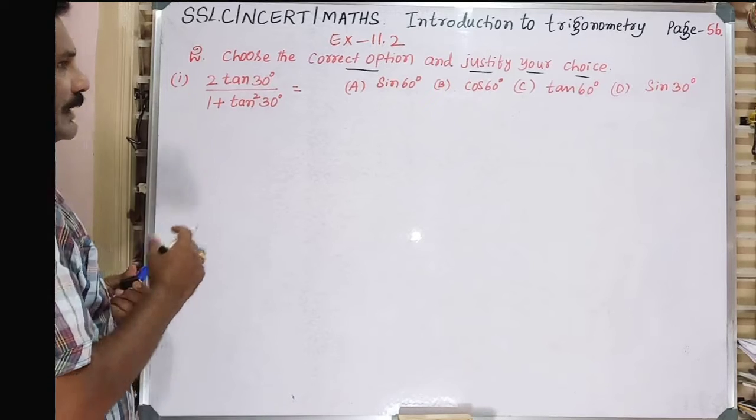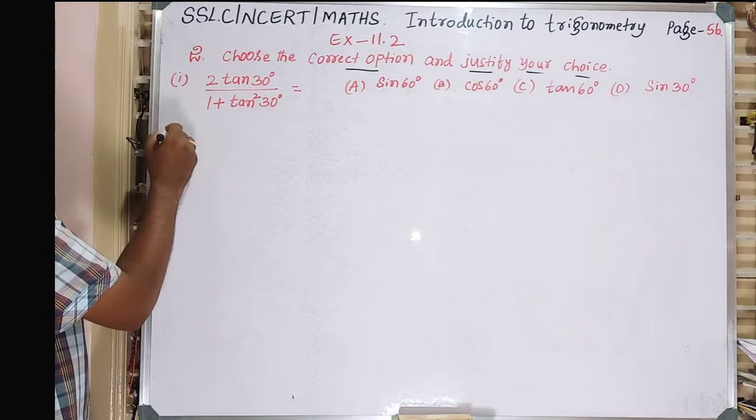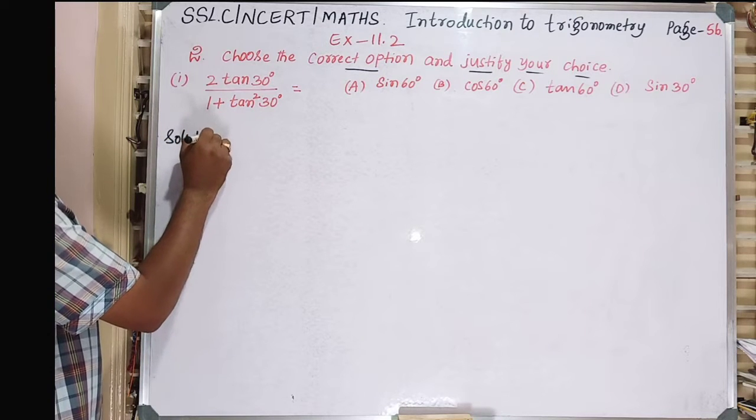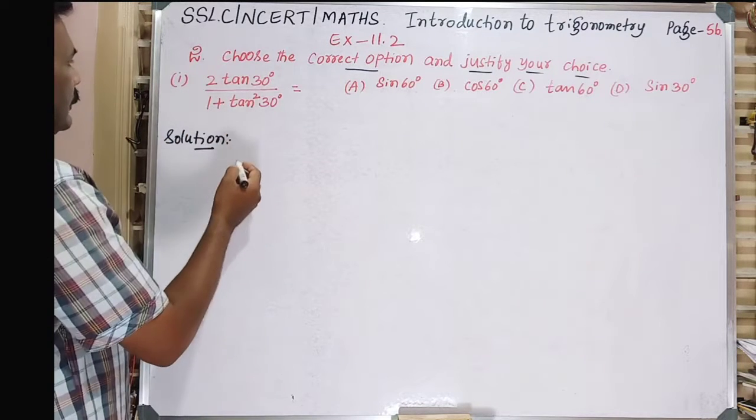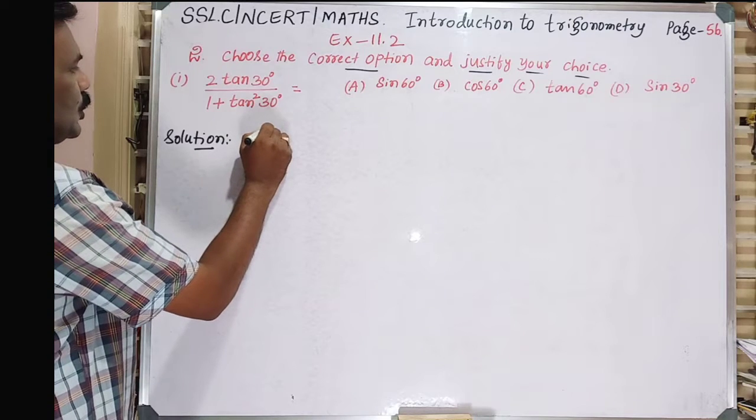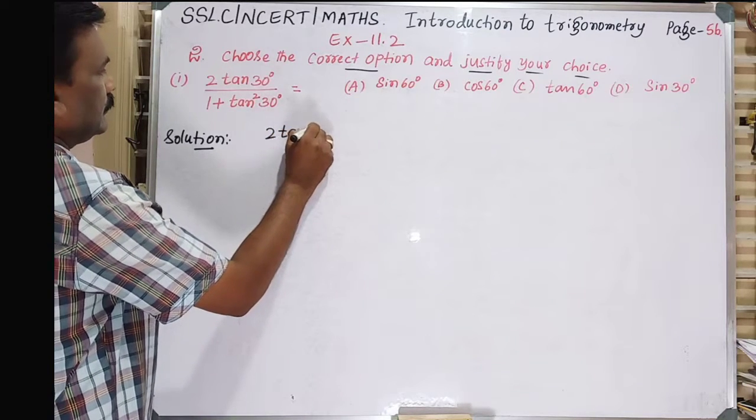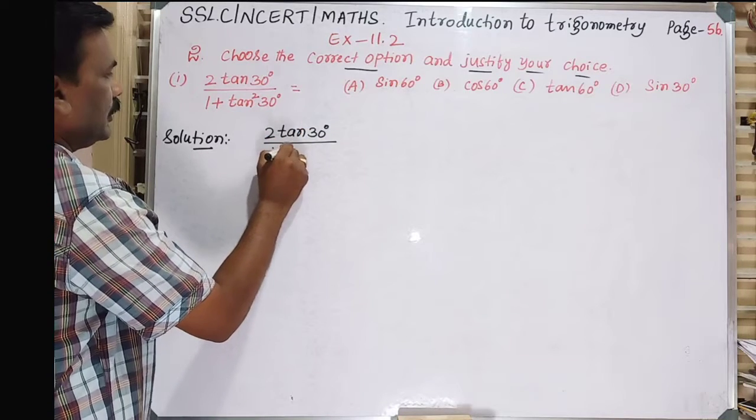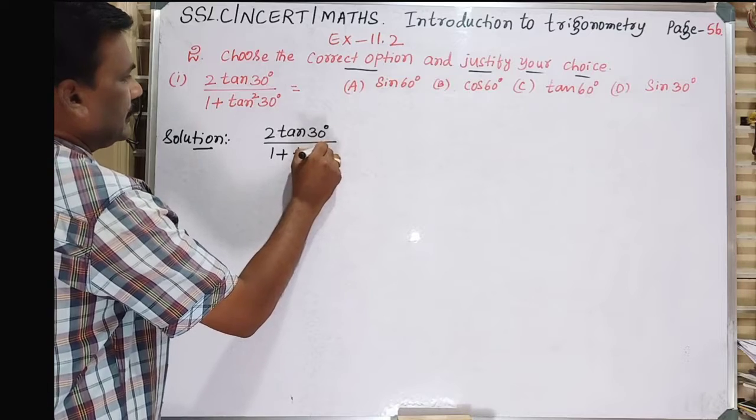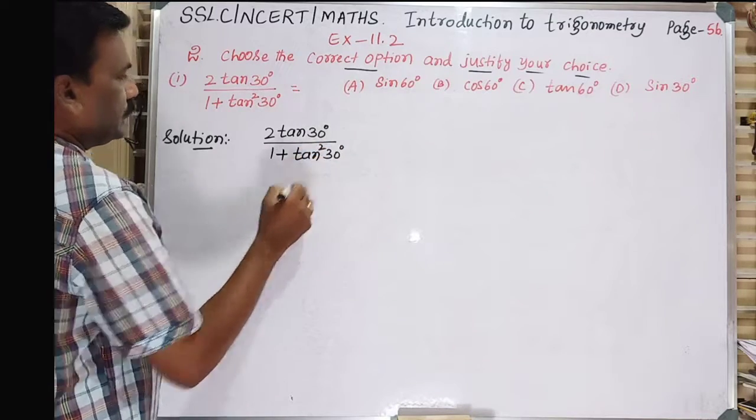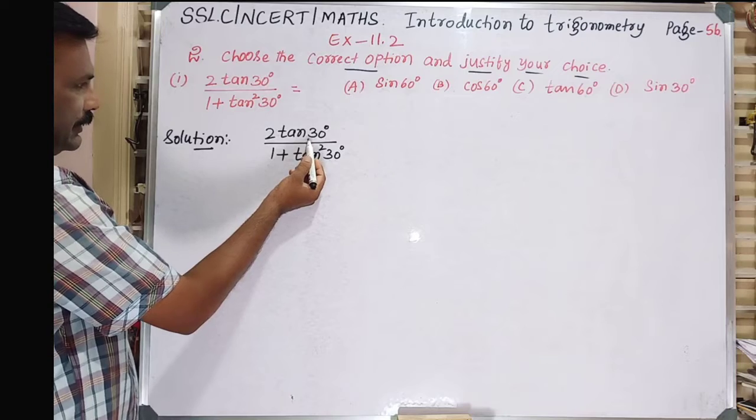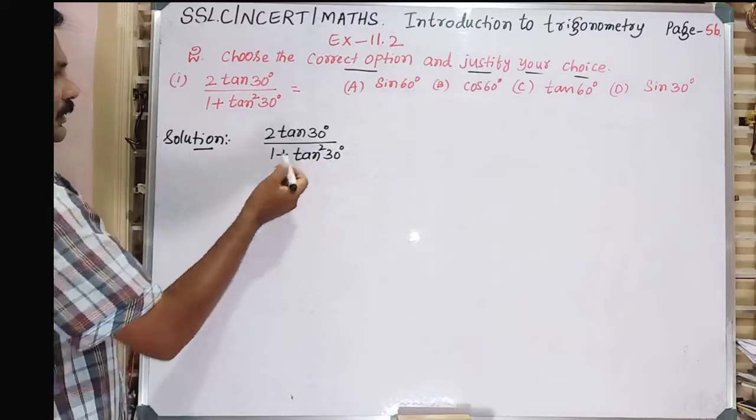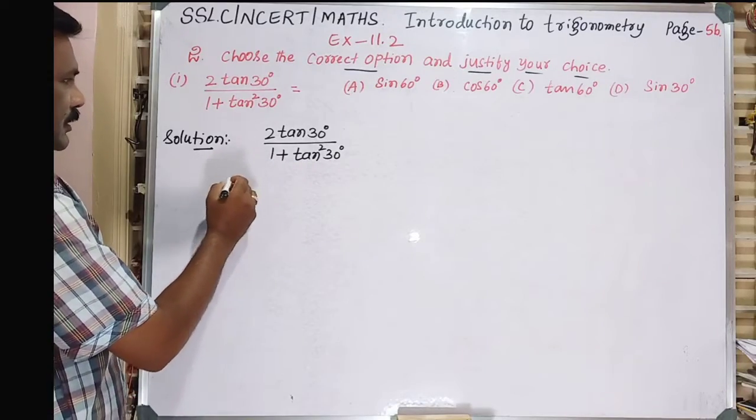So now let's evaluate this and find out which option is correct. I'll show you the solution. Given: 2tan30° divided by 1 plus tan²30°. Here tan30° whole square means (tan30°)².